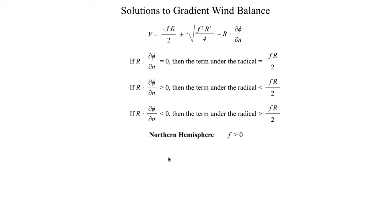For now, we're only going to focus on the northern hemisphere. In some of your later meteorology classes you might start worrying about what happens in the southern hemisphere, but for the sake of simplicity, let's just focus on what's going on in the northern hemisphere. Here, the Coriolis parameter F is going to be positive everywhere.